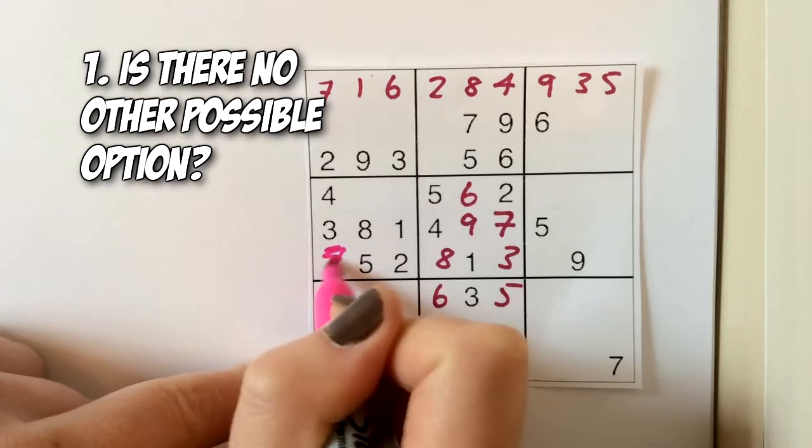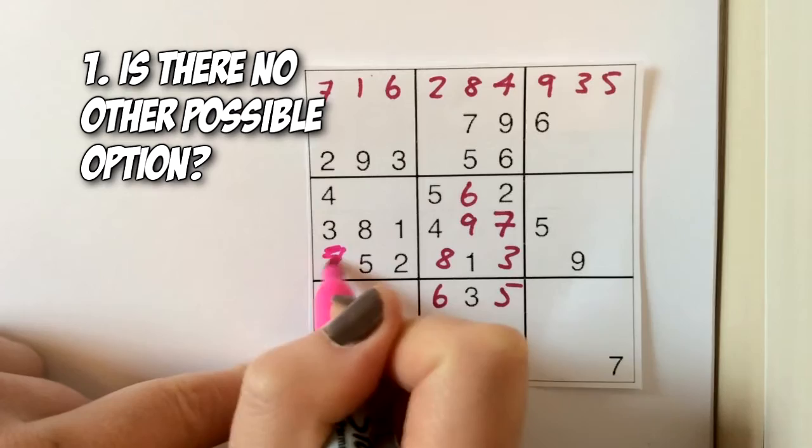There are several rules you might employ to deduce where the numbers go in the puzzle. For example, sometimes a number has to go in a specific place because there simply isn't another option for it in that particular square.